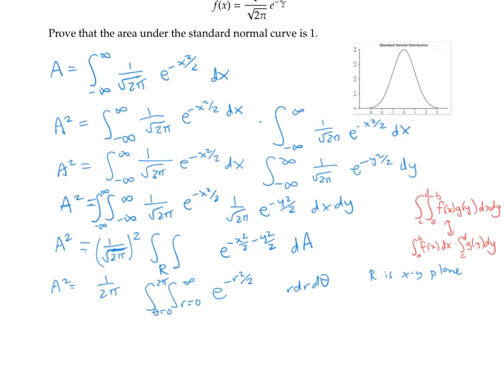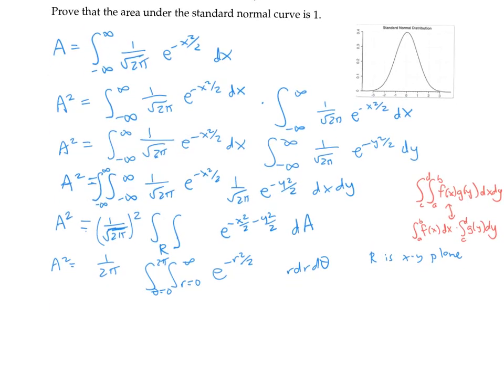Now I've got something I can actually compute. I'm going to use the same property to split up my integral into the integral from θ equals zero to 2π of dθ, times the integral from r equals zero to infinity of e to the minus r squared over 2 times r dr.